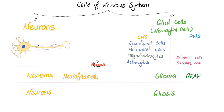In the peripheral nervous system, you have Schwann cells and satellite cells. A tumor made of neurons is called a neuroma; a tumor made of glial cells is called a glioma. To distinguish them, look at the intermediate filaments: in neurons they're called neurofilaments, but in glial cells they're called GFAP — glial fibrillary acidic protein.